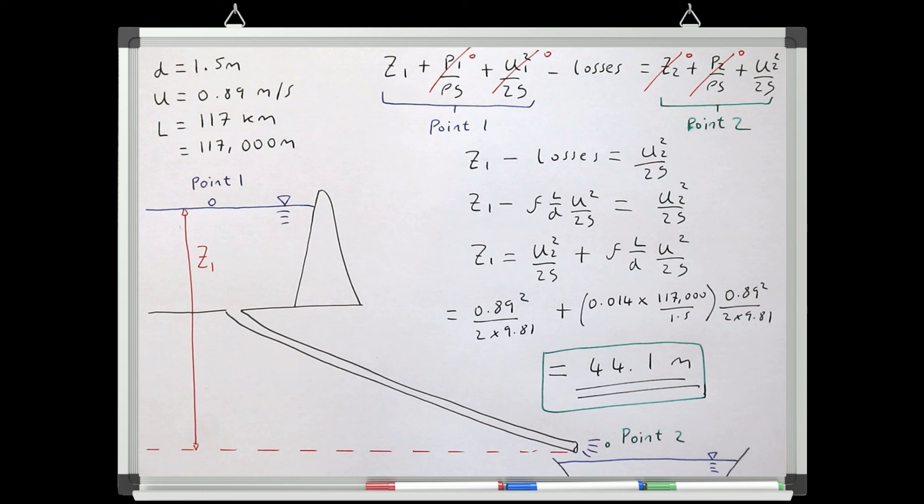But we can have a quick think of how we could improve this, by thinking about the assumptions we've made. Firstly, we have neglected local losses, and there will be some local losses in this system, and if we totaled them all up, it may well equal a few meters of elevation, that would bring us closer to the final answer.